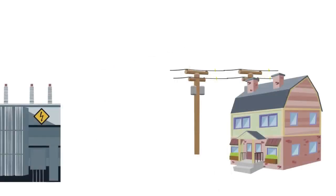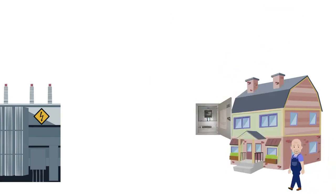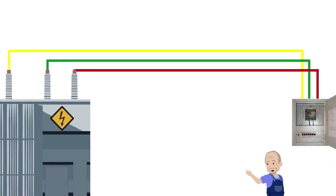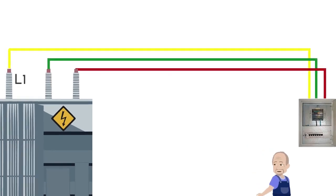To understand the way a grounding system works, let's draw a transformer substation circuit, in which the electricity is supplied to the consumer via three-phase conductors, L1, L2 and L3.